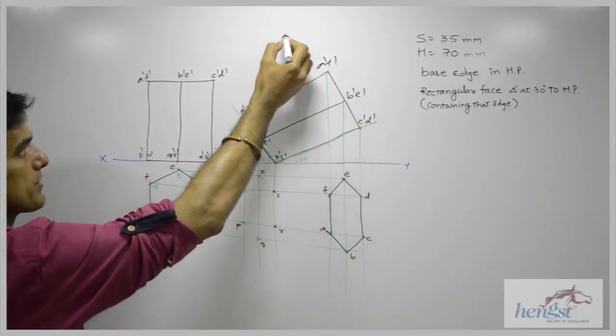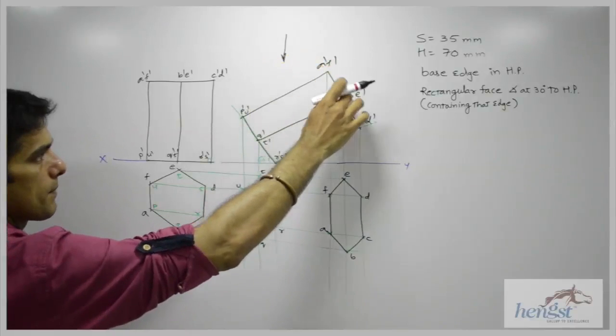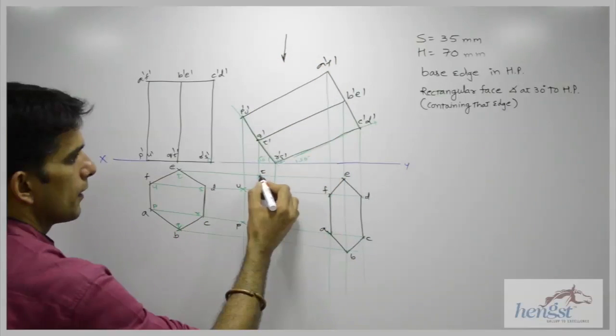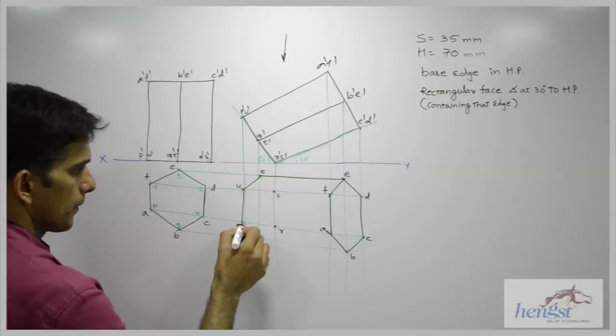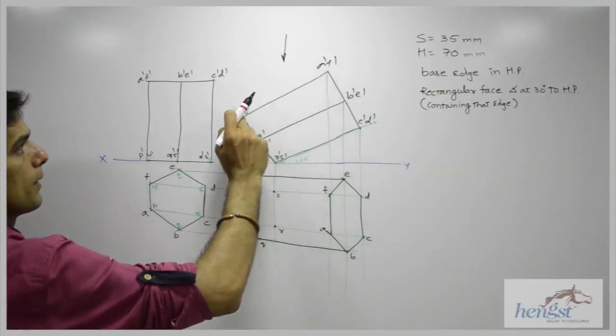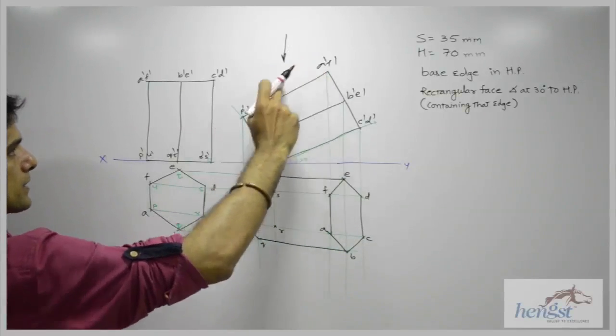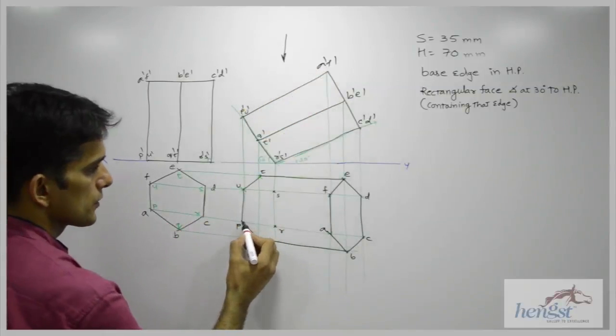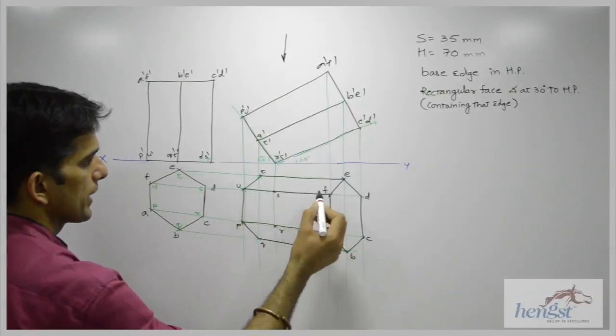So now when the observer sees from the top, you can see this part. So that will be dark. The boundary line will be dark. Now p dash, a dash and u dash, f dash will be dark. So p and a will be dark, u and f will be dark.